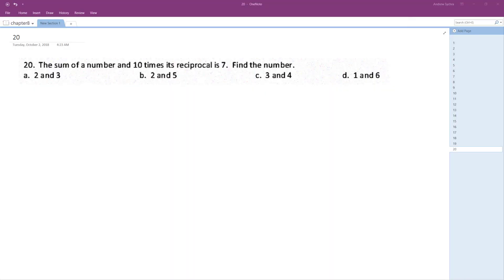All right, so we want to find a number where the sum of that number and 10 times its reciprocal is 7.